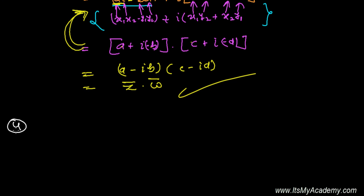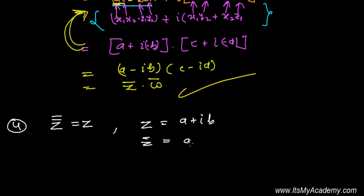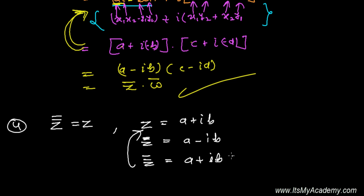The fourth property of the conjugate of a complex number: if you take the conjugate twice of a number, you get back the same complex number. Here Z is A + iB. The first conjugate is A − iB. Taking the conjugate of that again reverses the sign back, giving A + iB, which is the original Z. So the double conjugate of Z equals Z.